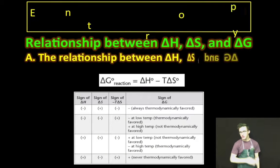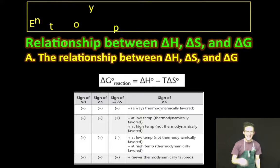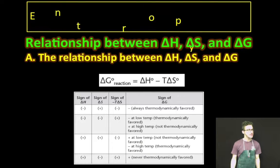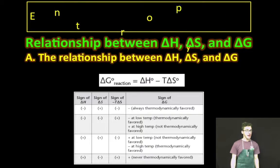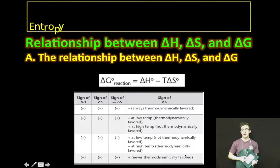The relationship between delta H, delta S, and delta G is provided in the equation that is on your screen, in your notes, and on your formula chart. The delta G of the reaction is equal to delta H minus T delta S. Now, if you understand basic algebra, this table probably makes a lot of sense.